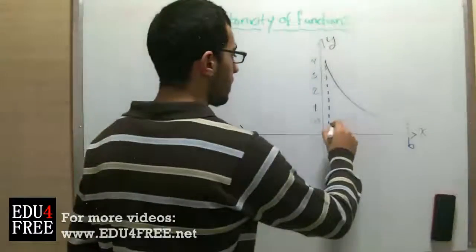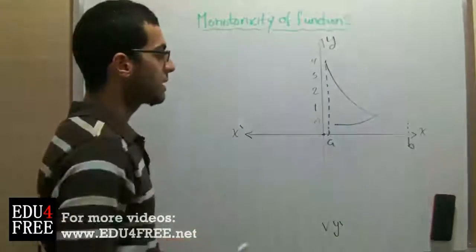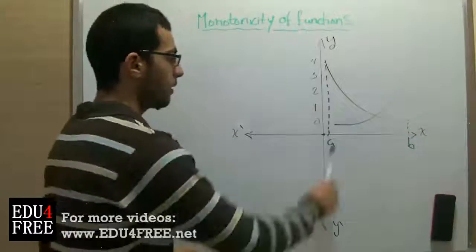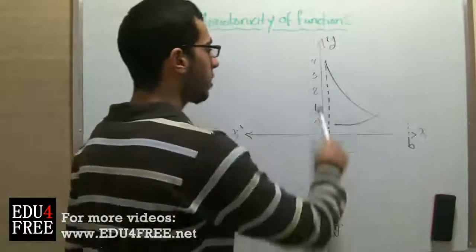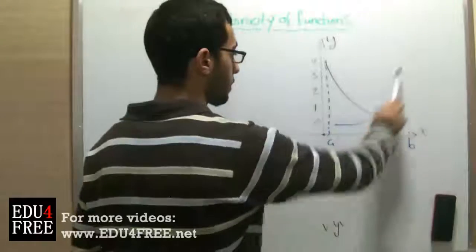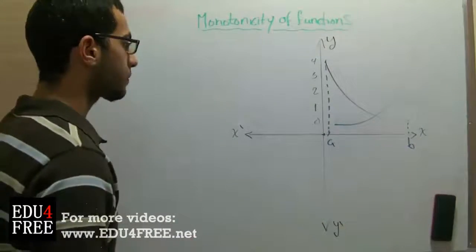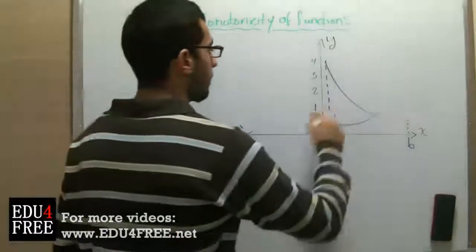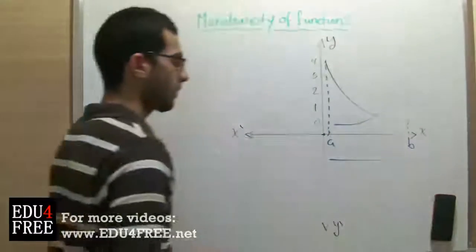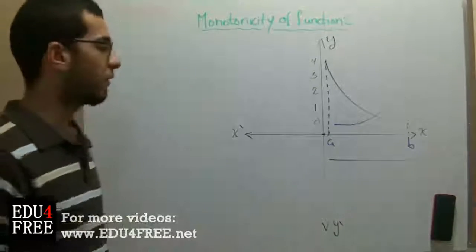On the other hand, if the shape of the graph goes upward, you can see that when you go from left to right the value of x increases and so does the value of y — the graph goes upwards — so this function is an increasing function. But if the function has a horizontal shape, you know it's a constant function.